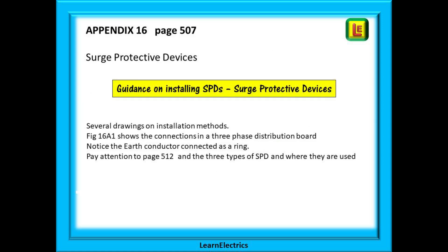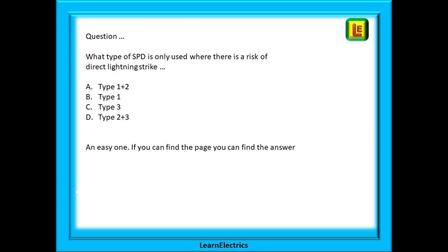Surge protective devices are the subject of appendix 16 on page 507. It is called 'devices for protection against over voltage.' There are many drawings on installation methods to look at, and questions will often be on SPD types as shown on the last page of this appendix, page 512. Be certain that you can find this page. A typical exam question might ask: what type of SPD is only used where there is a risk of a direct lightning strike? There is only a handful of lines to read — an easy question if you are on the right page.